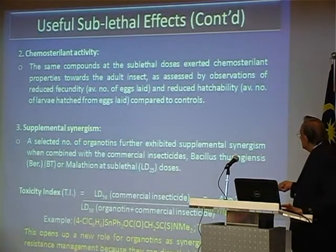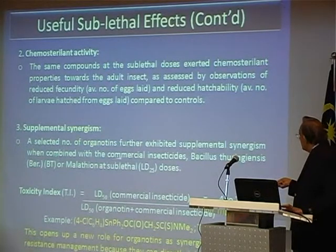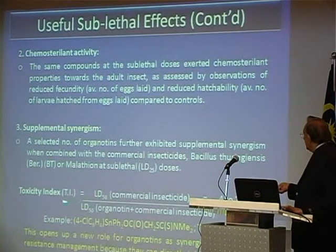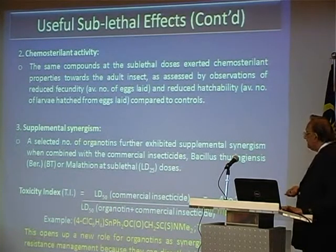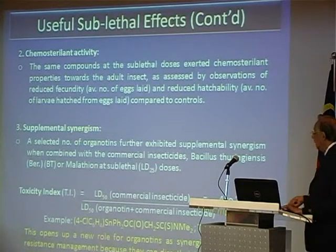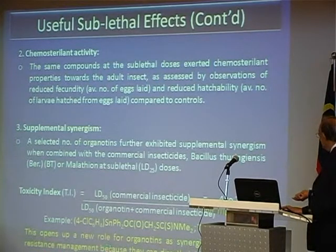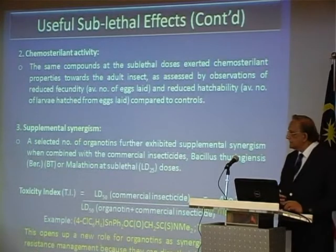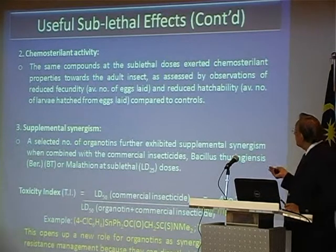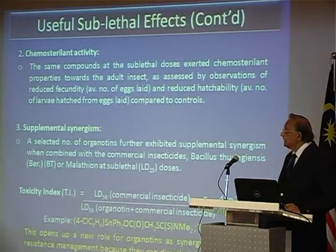The excitement in the toxicology world is here: supplemental synergism. A number of compounds exhibited supplemental synergism when combined with commercial insecticides — it could be Bacillus thuringiensis or malathion. The toxicity index goes from 4 to 20. People who get 1 to 3 are happy jumping up; we go 4 to 20. This particular compound shown in yellow is almost 20. This opens up a new role for organotins as synergist insecticide resistance management because they directly inhibit the resistance mechanism itself. These are excellent sublethal effects of organotins that can be applied in agriculture.